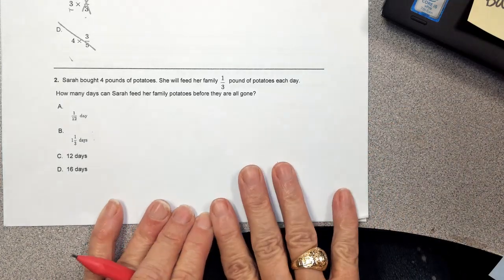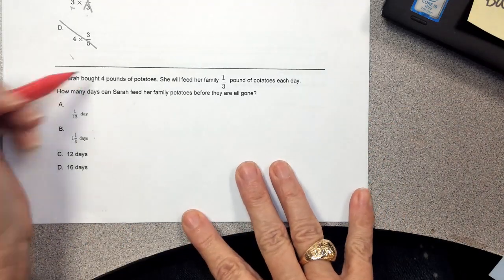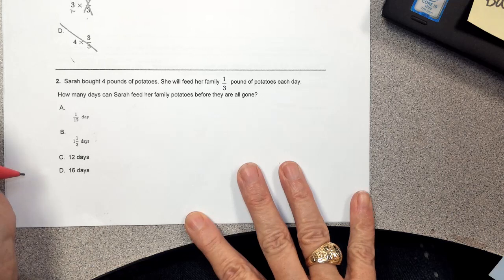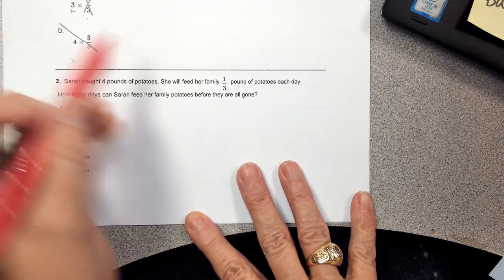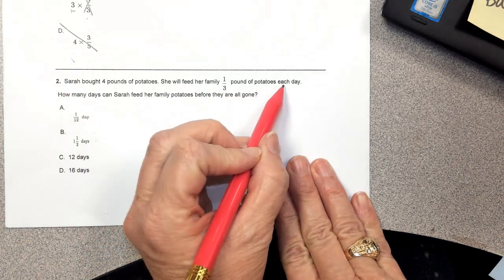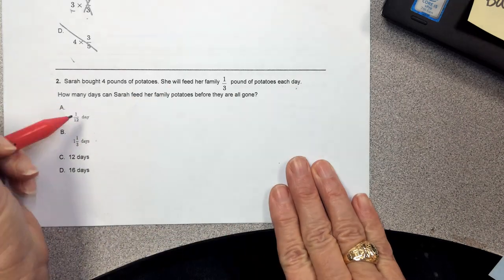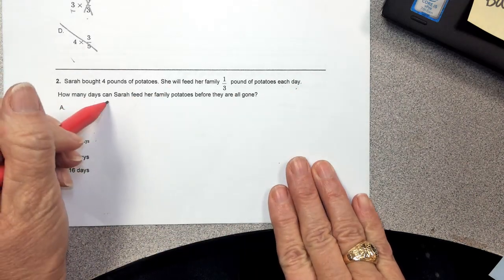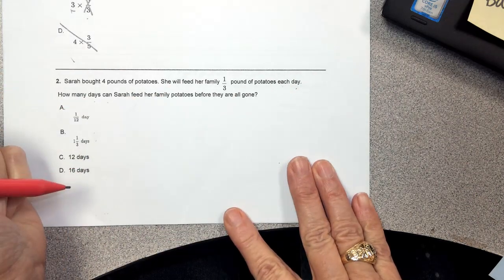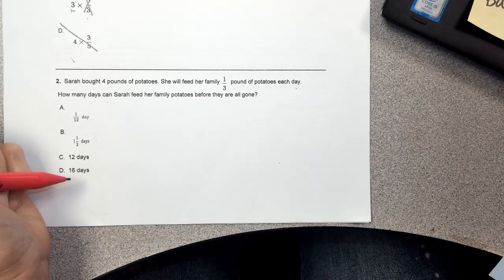Number two, Sarah bought four pounds of potatoes. She will feed her family one-third pound of potatoes each day. How many days can Sarah feed her family potatoes before they are all gone?